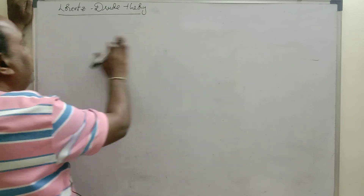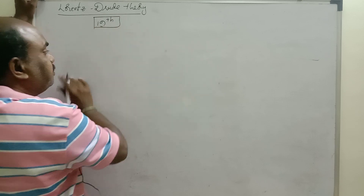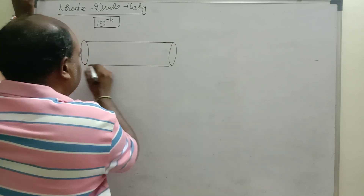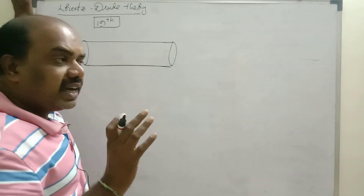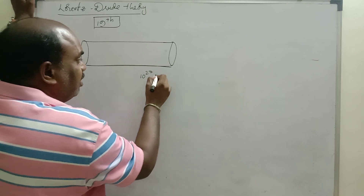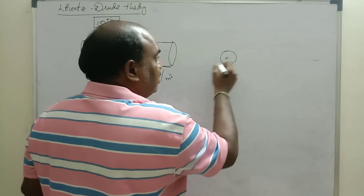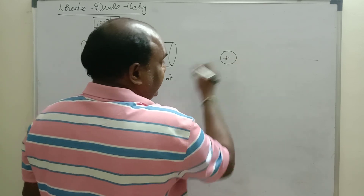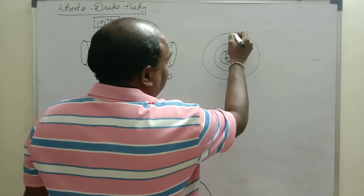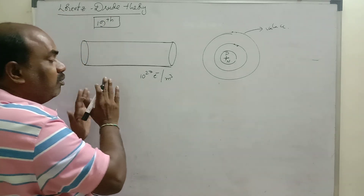Now we will see the Lorentz-Drude theory. What is the Lorentz-Drude theory? This theory was developed by Lorentz and Drude. Let us consider this is a conductor. Every conductor consists of 10 power 27 free electrons per cubic meter. Every metal consists of so many atoms. In the middle of each atom, the nucleus is present, which consists of protons and neutrons. Around the nucleus, shells are present filled with electrons. The outermost electrons are called valence electrons.